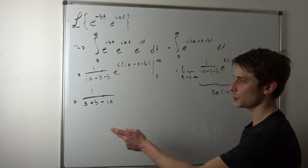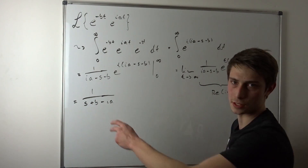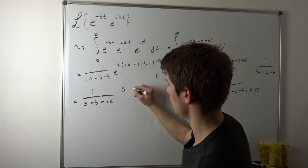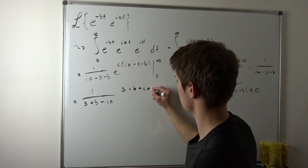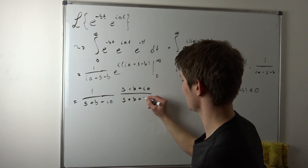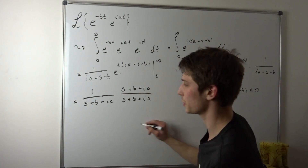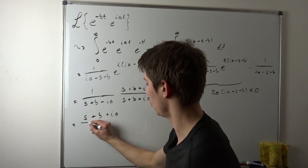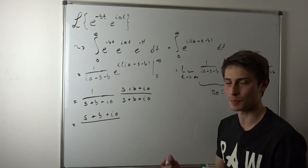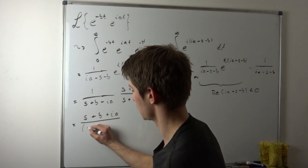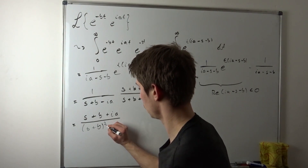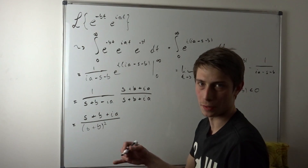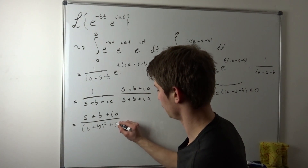That's not our final result because that's an ugly-looking complex number. So we have to advance this fraction by its complex conjugate. We multiply by 1, where the 1 looks like (s plus b plus ia) over (s plus b plus ia). Up in the numerator this just stays the same: s plus b plus ia. Down in the denominator this is just the norm squared: (s plus b) squared. And well, i squared is just negative 1, so that's positive a squared.